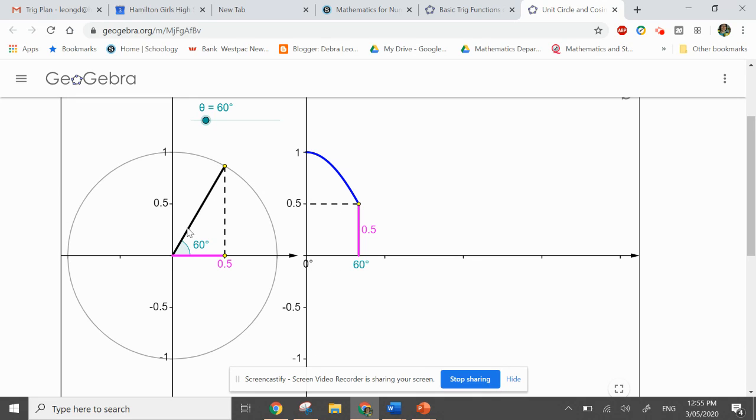We've got a unit circle with a right angle triangle drawn inside, and if you remember, the x-coordinate for that point up there is the width of the right angle triangle. So we're going to look this time at the length of the purple line.